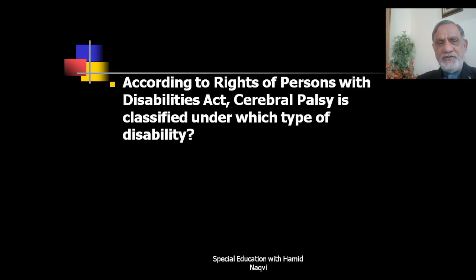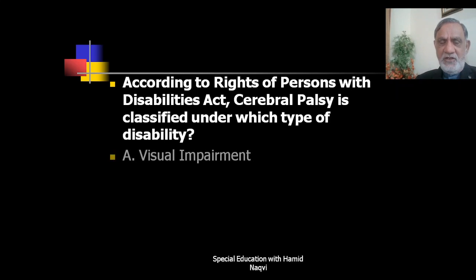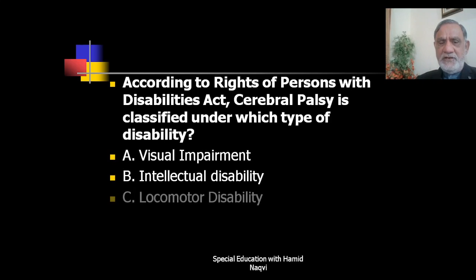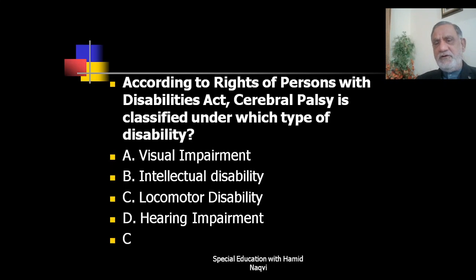Next question: According to the Rights of Persons with Disabilities Act, cerebral palsy is classified under which type of disability — visual impairment, intellectual disability, locomotor disability, or hearing impairment? The correct answer is C — locomotor disability.